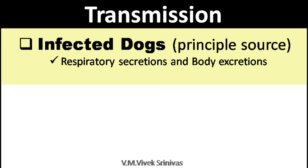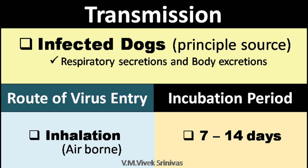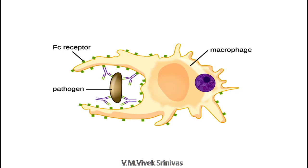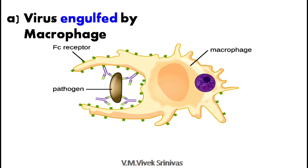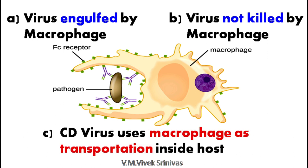Transmission: The respiratory secretions and body excretions from infected dogs act as the principal source of this virus. The portal of entry is through inhalation, that is the airborne route. The incubation period is on average 7 to 14 days from the entry of the virus. These viruses are generally engulfed by macrophages, but the virus is not killed by the macrophage. Instead, the virus uses the macrophage as transportation inside the host.